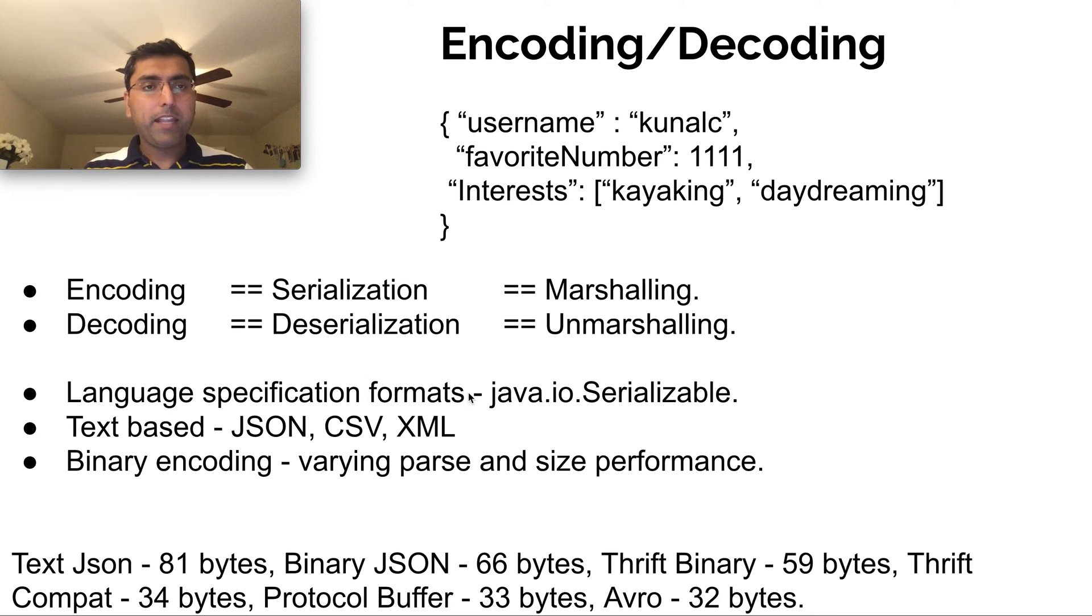But the same data can be stored using Thrift, which is another mechanism from Facebook, in a binary form in 59 bytes for Thrift binary. And then there's Thrift compact version that stores in 34 bytes. And there's Protocol Buffer from Google which stores this in 33 bytes. And there's Avro, which was also another thing introduced 5-10 years ago, which stores in 32 bytes. So you see there's various mechanisms for encoding this.